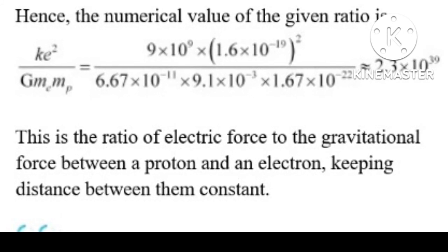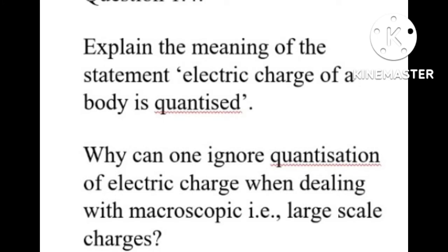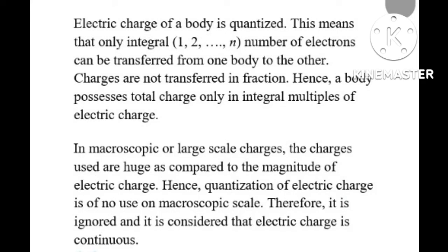Question 1.4: Explain the meaning of 'electric charge of a body is quantized.' This means only integral numbers (1, 2, 3, …) of electrons can be transferred from one body to another; charges are not transferred in fractions, so a body possesses total charge only in integral multiples of the elementary electric charge. For macroscopic charges, the charges involved are huge compared to the elementary charge, so quantization has no practical effect and electric charge is treated as continuous.